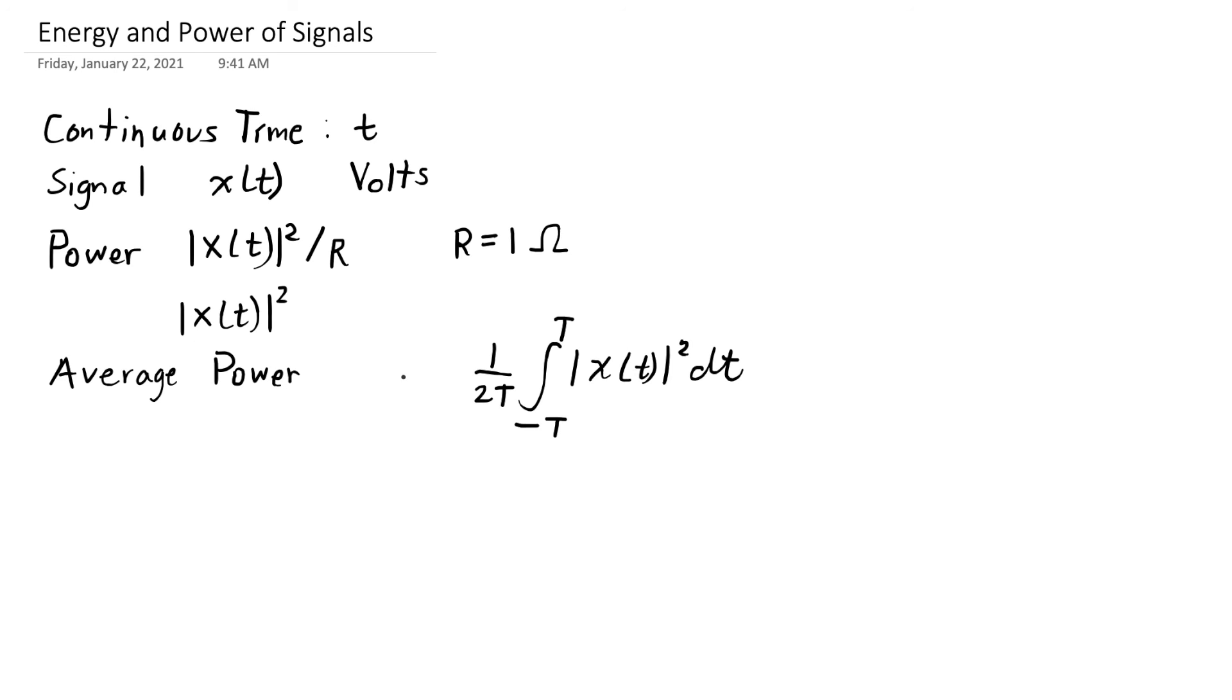If this signal goes on forever, then we're going to take the limit as T goes to infinity. So we're considering all time from negative infinity to plus infinity, and we're averaging that power.